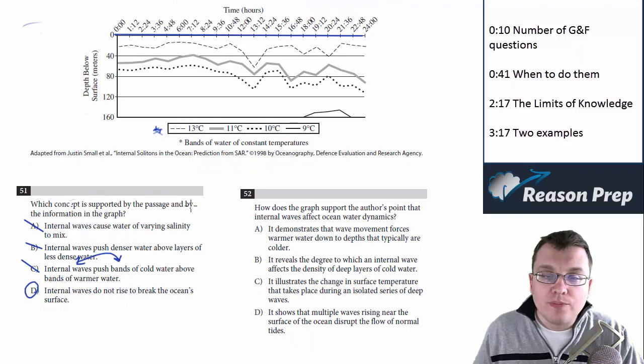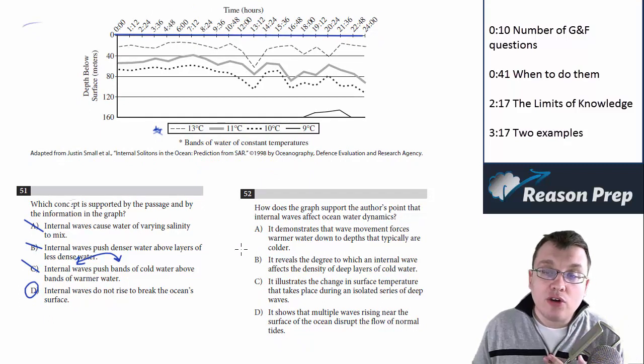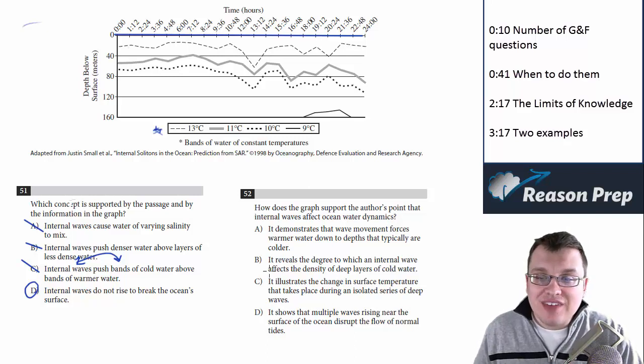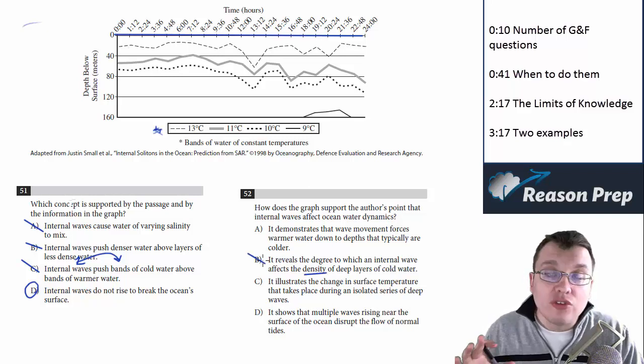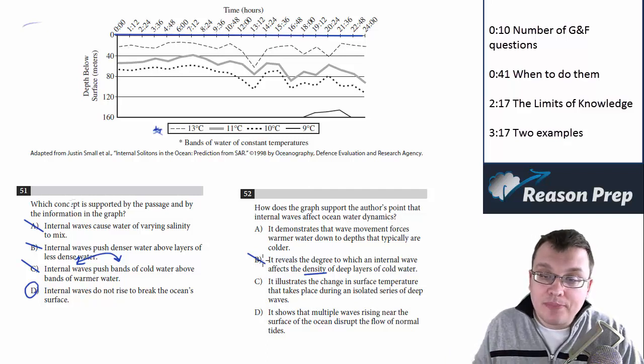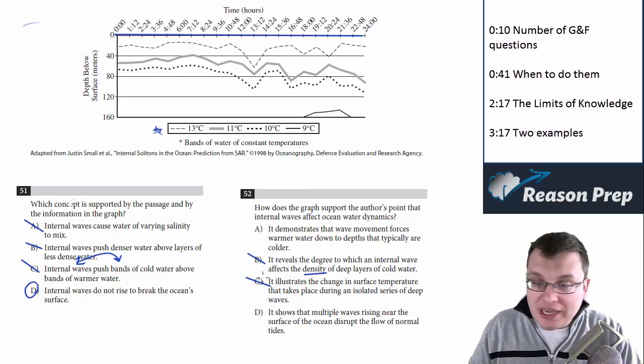Now how about question 52? 'How does the graph support the author's point that internal waves affect ocean water dynamics?' When we look at these choices, again, the same kinds of things come up. With B, we're talking about density. Again, the graph says nothing about density. That's the limit to our knowledge here about density. The graph says nothing about it. Surface temperature, same issue. The graph says nothing about the temperature of the surface. Nothing at all. We can't make that decision.